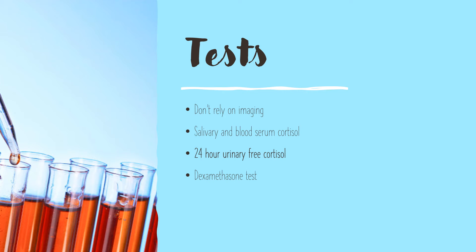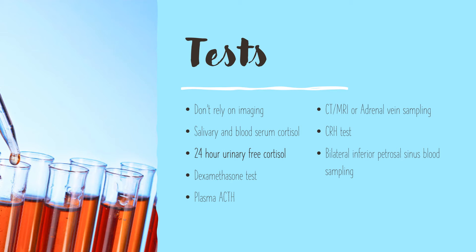Doing a dexamethasone test is a brilliant next step — the patient orally ingests dexamethasone, about 1mg at midnight, and then you do a serum cortisol test the next morning at around 8am. It should be suppressed due to dexamethasone administration, but in Cushing's syndrome it actually won't be suppressed. In order to localise the lesion, you might first want to try a plasma ACTH. If the ACTH is undetectable, an adrenal tumour is likely, and you're going to want to do a CT or MRI to look at the adrenal glands. If there's still no mass imaged, progress to adrenal vein sampling. If ACTH is detectable, carry out a corticotropin-releasing hormone test to see whether the disease is associated with pituitary disease or ectopic ACTH production. If the test indicates that cortisol responds to this manipulation, then the most likely diagnosis is Cushing's disease, so you should image the pituitary via MRI and consider doing a bilateral inferior petrosal sinus blood sampling.